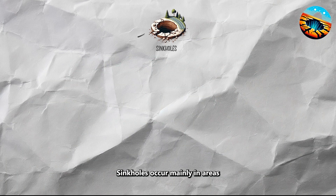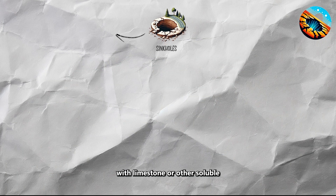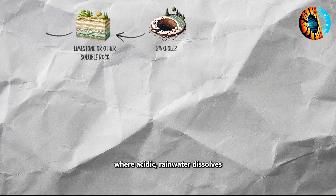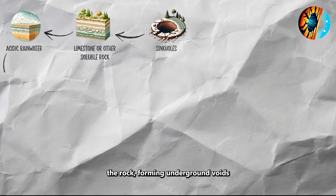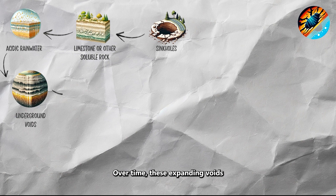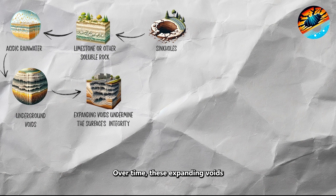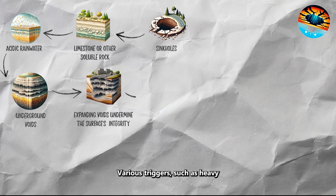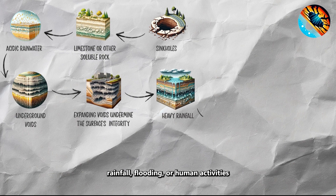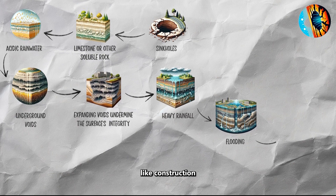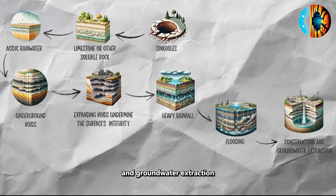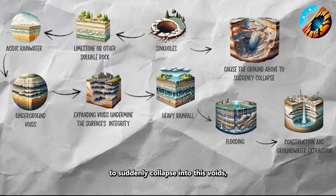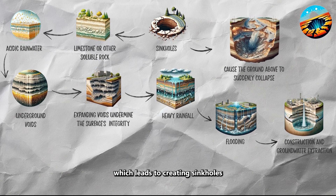Sinkholes occur mainly in areas with limestone or other soluble rock substrates, where acidic rainwater dissolves the rock, forming underground voids. Over time, these expanding voids undermine the surface's structural integrity. Various triggers, such as heavy rainfall, flooding, or human activities like construction and groundwater extraction, can cause the ground above to suddenly collapse into these voids, creating sinkholes.